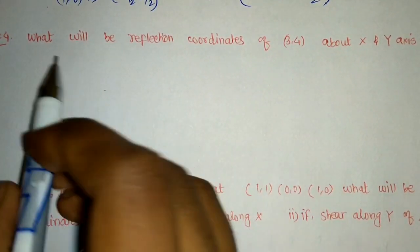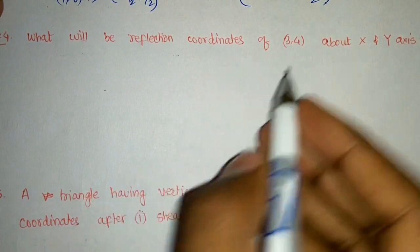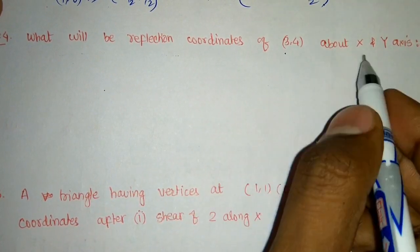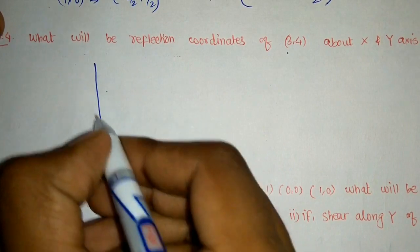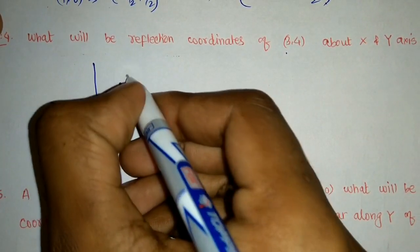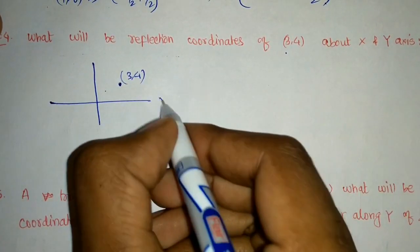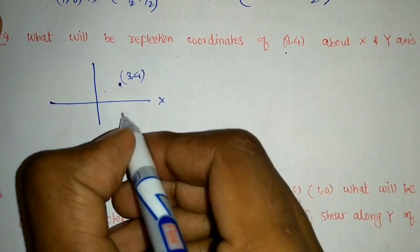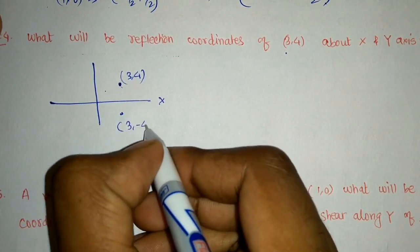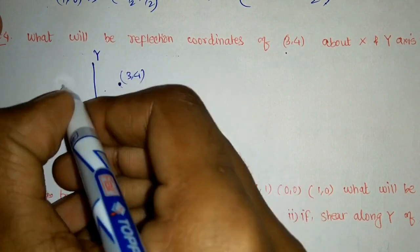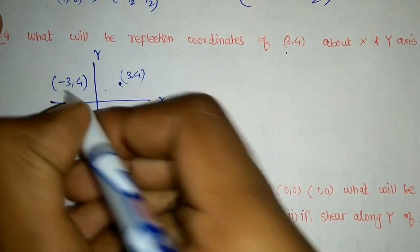For the reflection question: point (3, 4) reflected about the x-axis gives (3, minus 4). Point (3, 4) reflected about the y-axis gives (minus 3, 4). These are straightforward reflections.